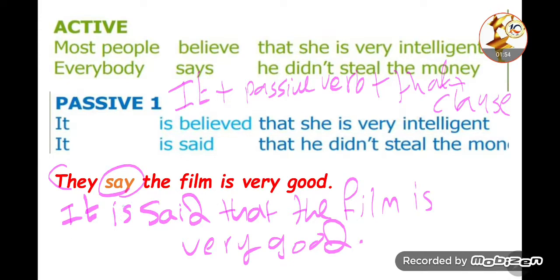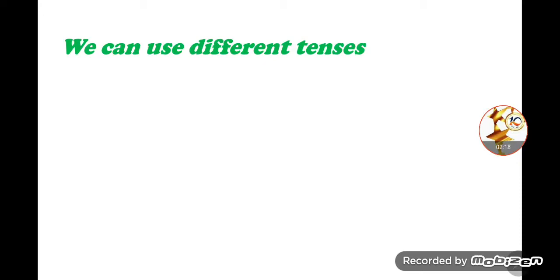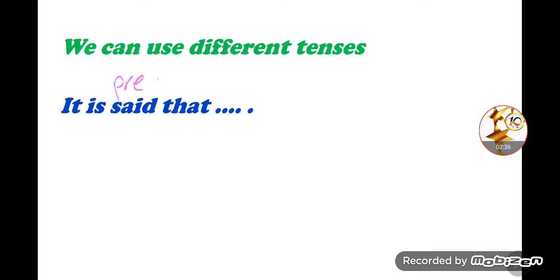After 'it', depending on the tense, we can use 'was', 'has', 'had', etc., followed by the third form of the reporting verb, then 'that', then the clause. So the sentence becomes: 'It is said that the film is very good.' This is present tense.